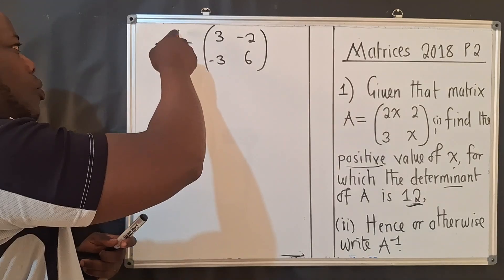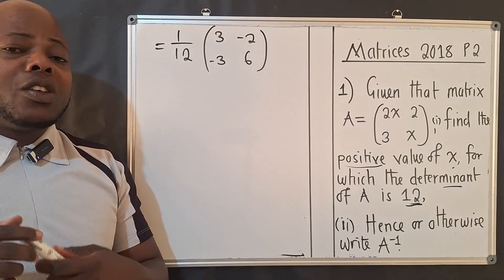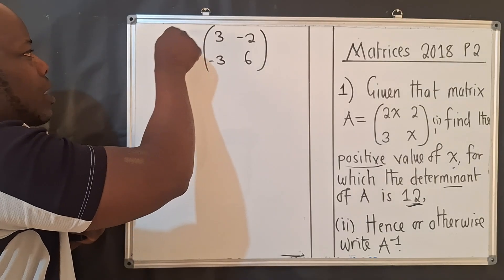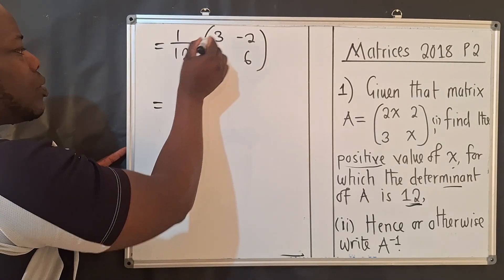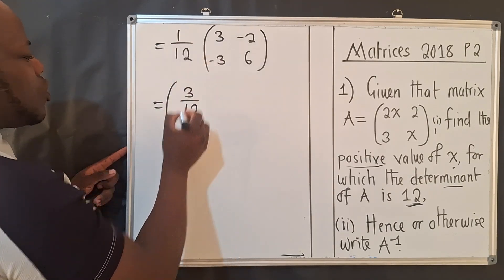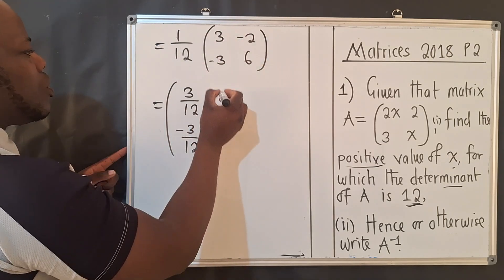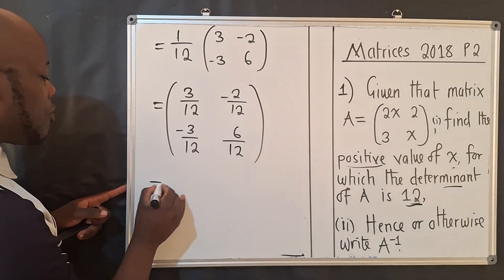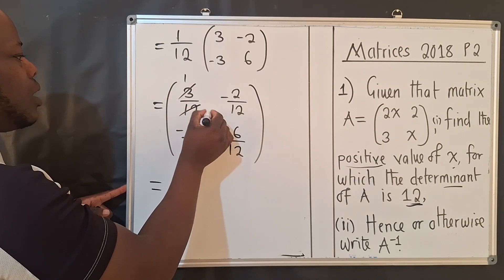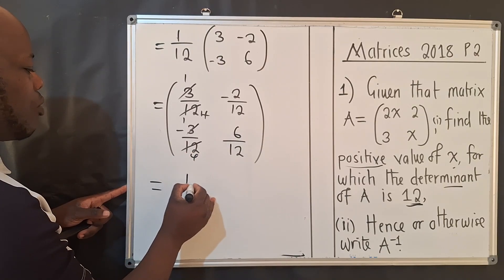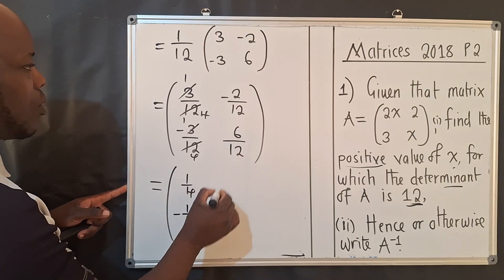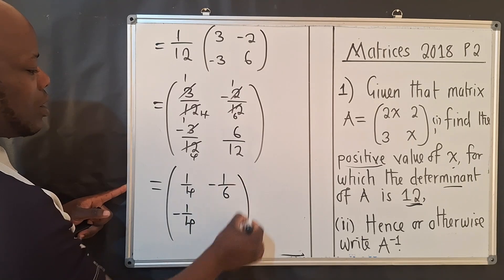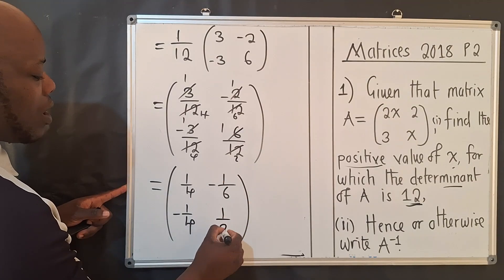Now multiply 1 over 12 by everything inside. This gives [3/12, -2/12; -3/12, 6/12]. Simplifying: 3/12 is 1/4, negative 2/12 is negative 1/6, negative 3/12 is negative 1/4, and 6/12 is 1/2. So A inverse equals [1/4, -1/6; -1/4, 1/2].